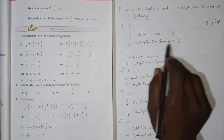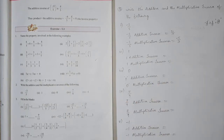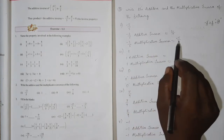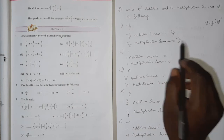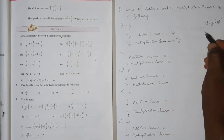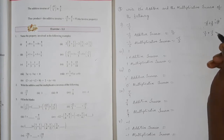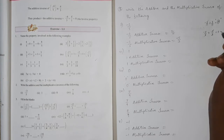For the multiplicative inverse: minus 3 by 5 into minus 5 by 3 — minus into minus is plus, 5 and 5 cancel, 3 and 3 cancel — the answer value is 1. So the multiplicative inverse of minus 3 by 5 is minus 5 by 3.